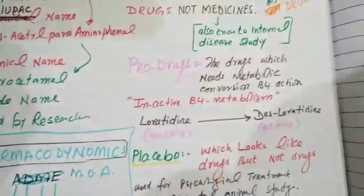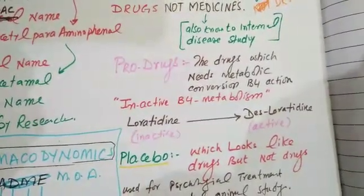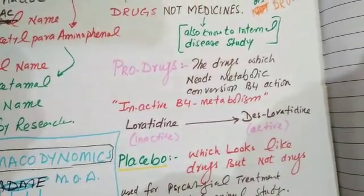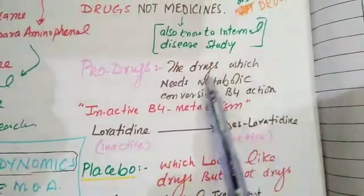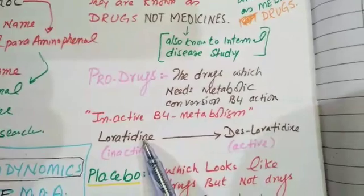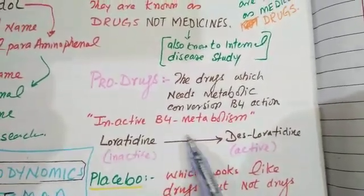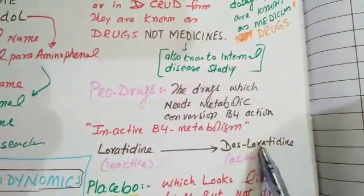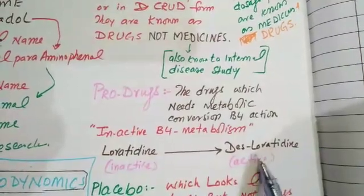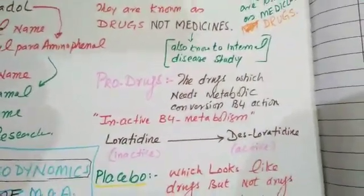What is a pro-drug? Pro-drugs are drugs which need metabolic conversion before action — meaning they are inactive before metabolism. For example, loratadine is an inactive anti-histaminic and anti-allergic drug. But once we use loratadine inside the body, there is a metabolism. Due to metabolism, loratadine is converted into des-loratadine, and now des-loratadine is the active anti-histaminic and anti-allergic compound. Such drugs are known as pro-drugs.